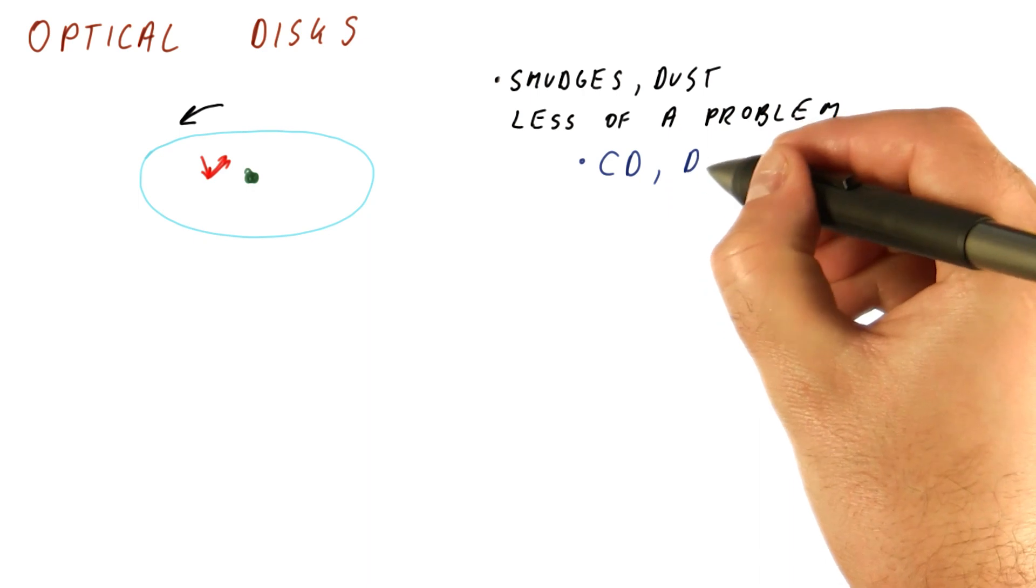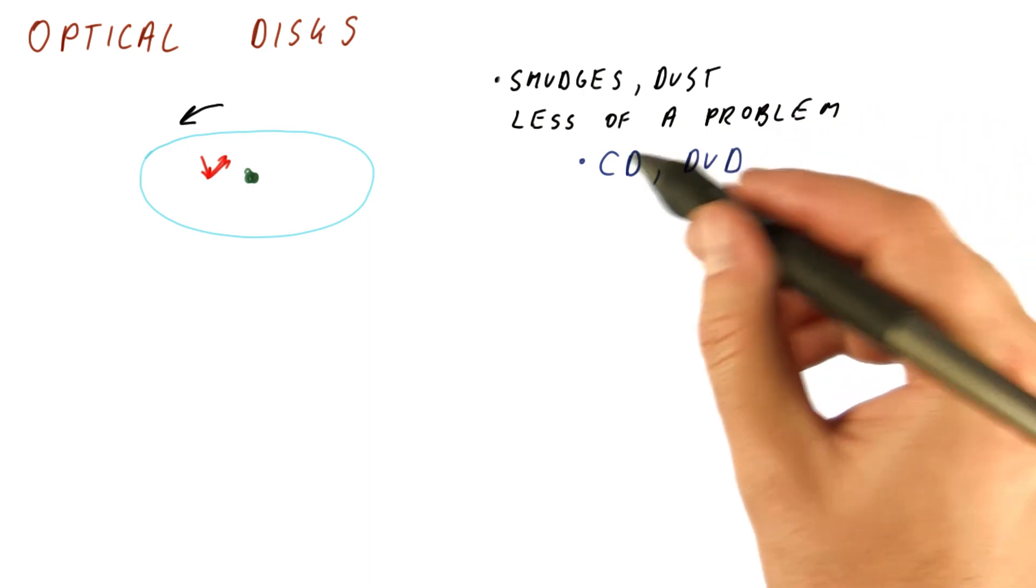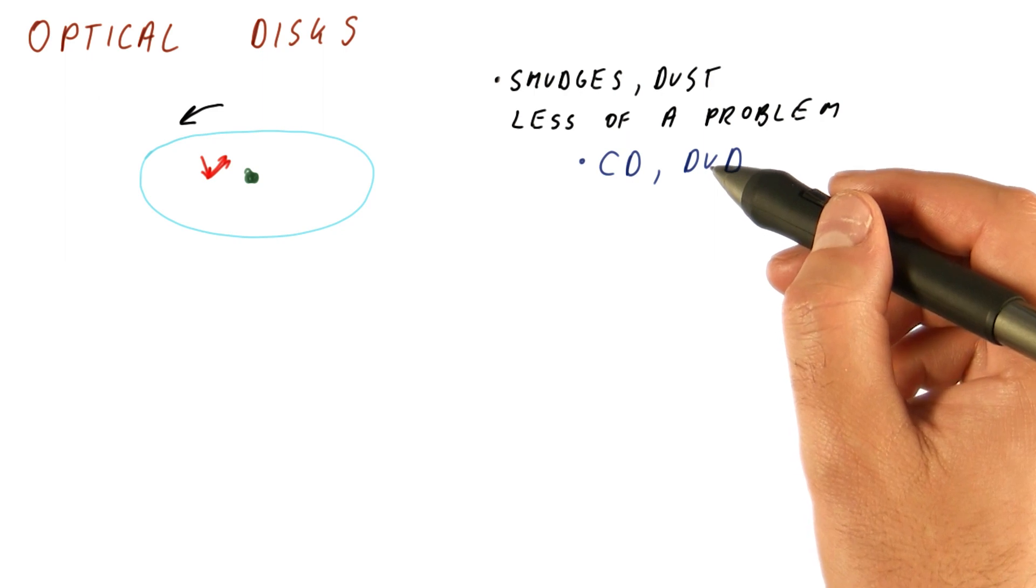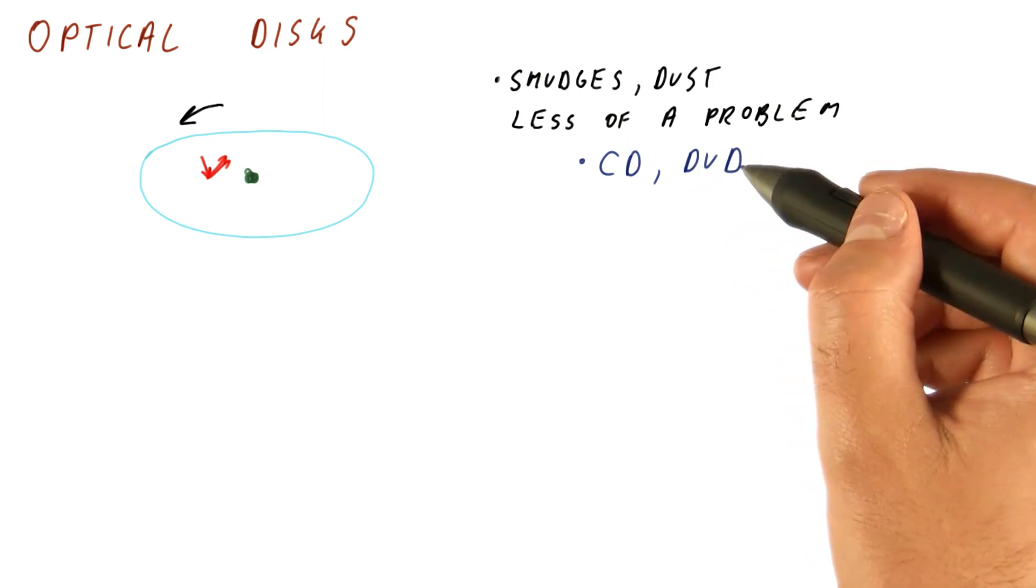Because optical disks suffer less from this problem, we often see them in the form of CDs and DVDs that we can carry around, and even though they get dirty, we can still read data from them.